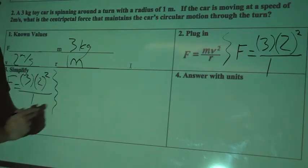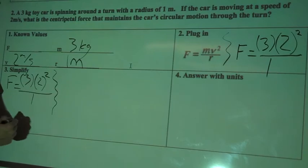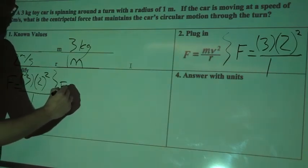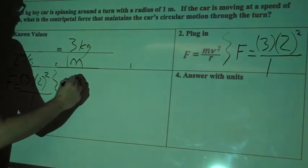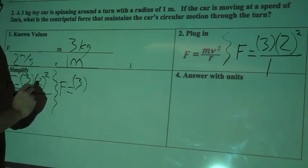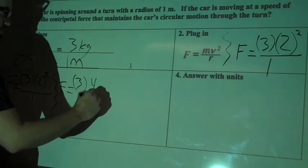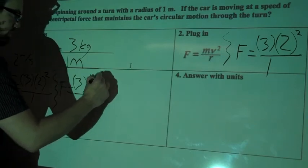A little squiggly line here to solve the next step. I'll take care of the exponent first. So I'm going to have F equals three, and then two squared is two times two. So I'll have four over there instead of that two squared divided by one.